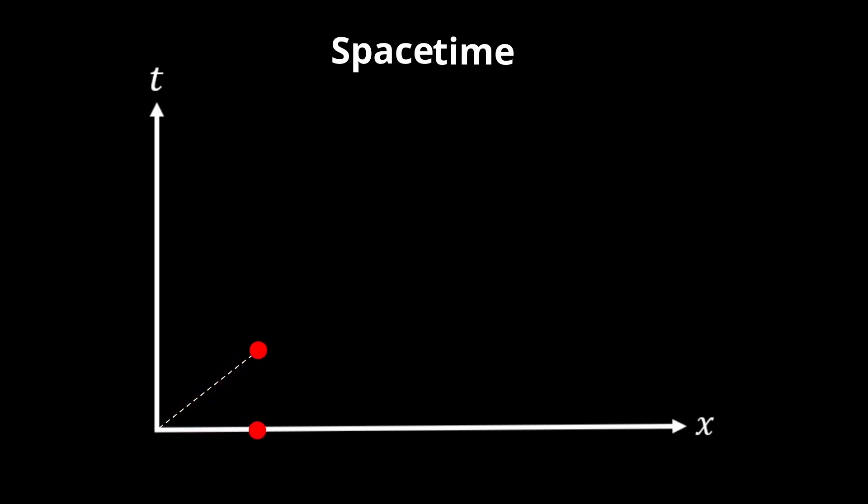Path curvature K in spacetime tells us how much the spacetime path bends, and it bends in spacetime when speed increases and when a path in space bends. In other words, path curvature in spacetime is precisely the counterpart to acceleration in space.